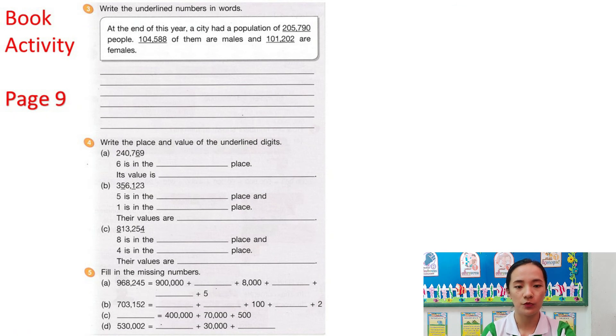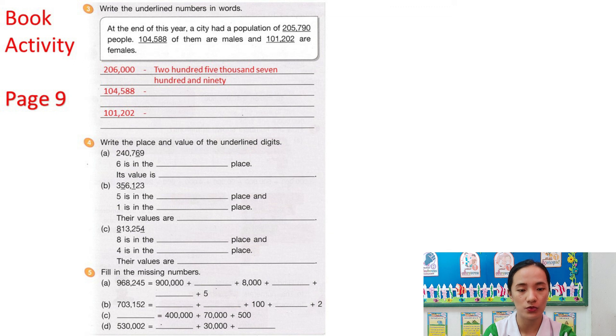Next, for the last page of your activity, page 9. Write the underlined numbers in words. So, let me read this first. At the end of this year, a city had a population of 205,790 people. 104,588 of them are males and 101,202 are females. So, we have three given numbers. Write them in words on the blanks below.